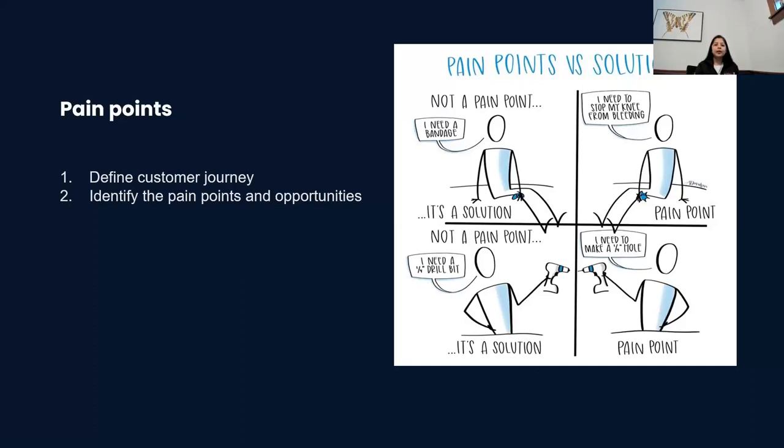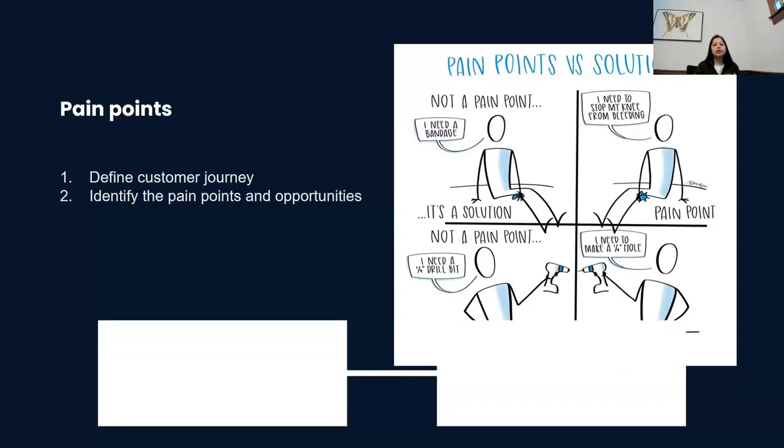That's where the second example takes me. I need a drill bit. Why do you need a drill bit? I need to drill a hole. Where do you need to drill a hole? Is it a concrete wall or is it a wood wall? And that will define what is the solution, what kind of a drill bit.